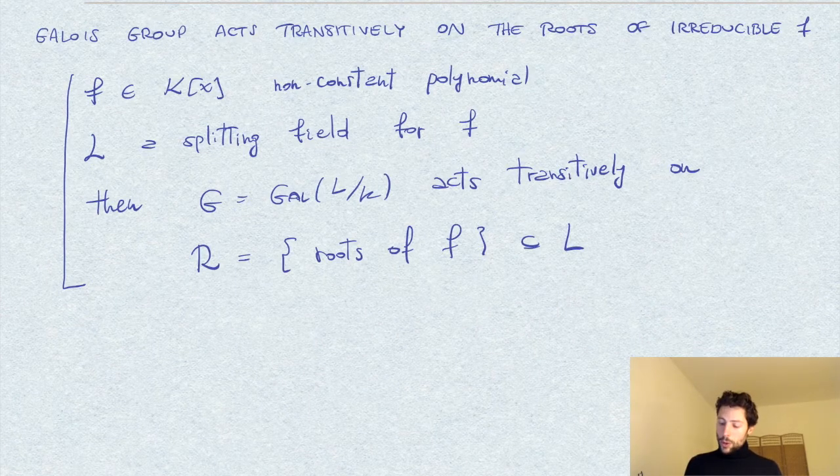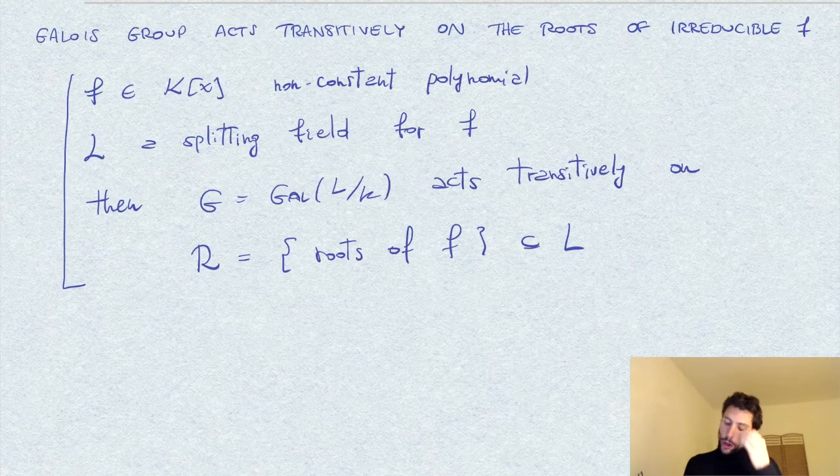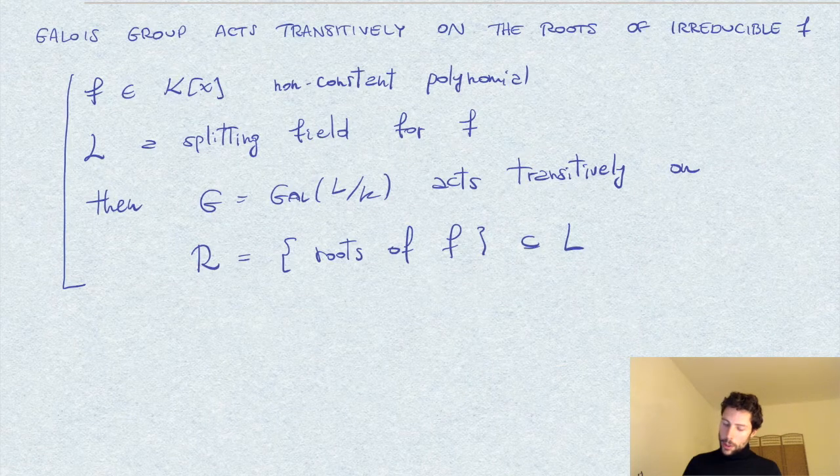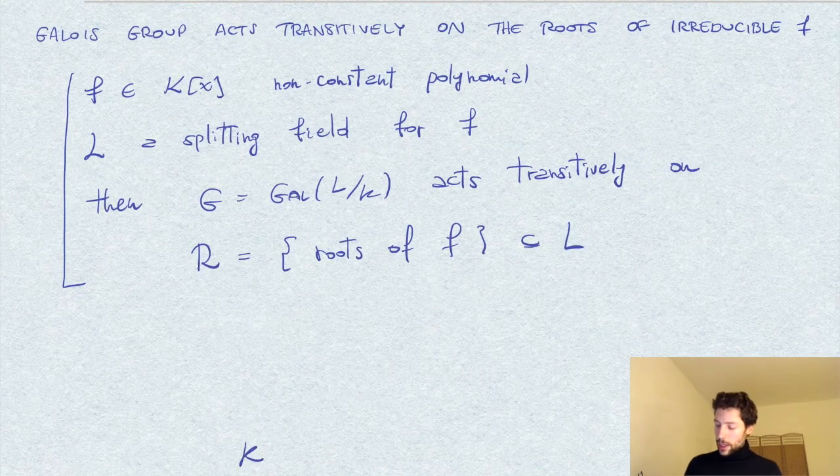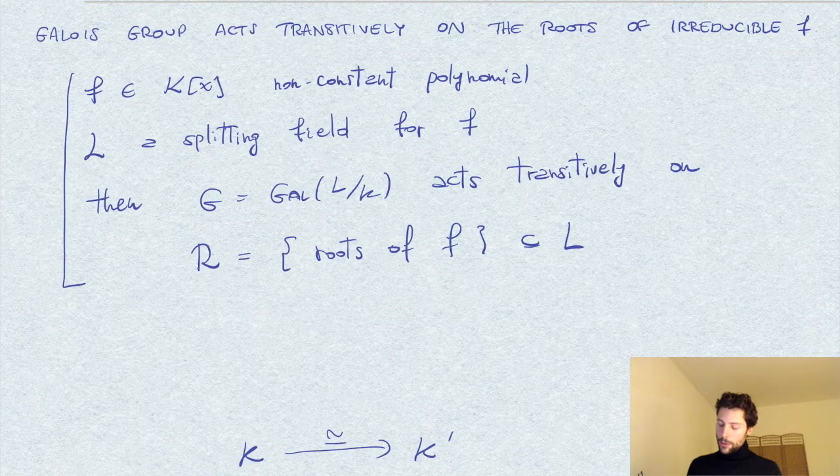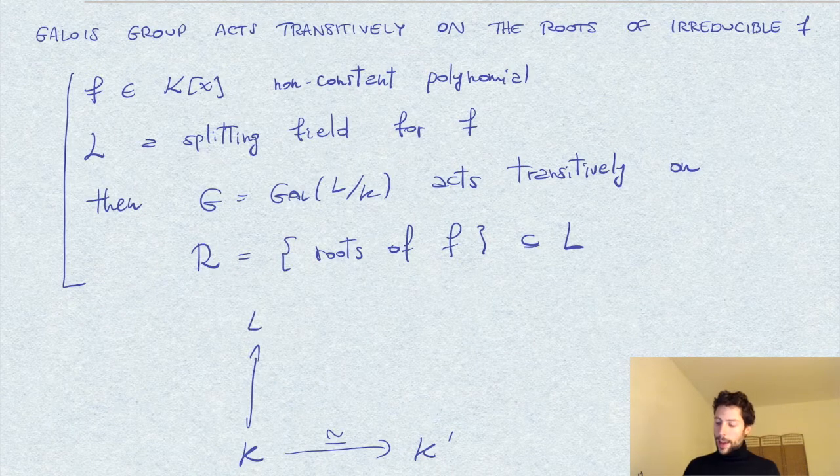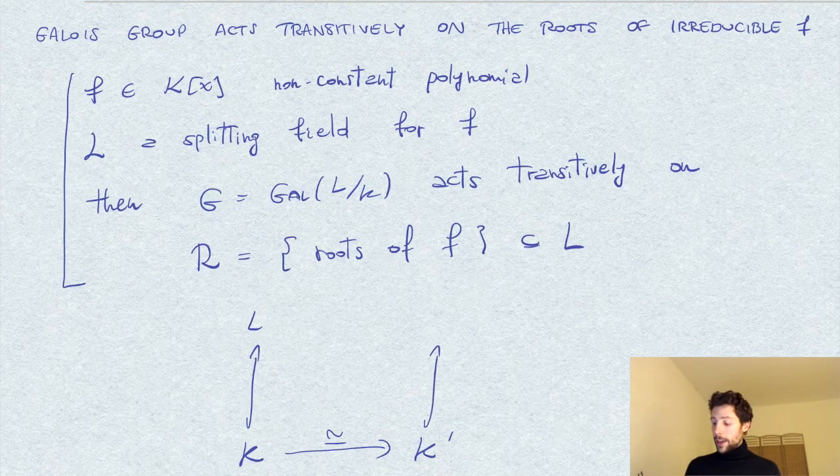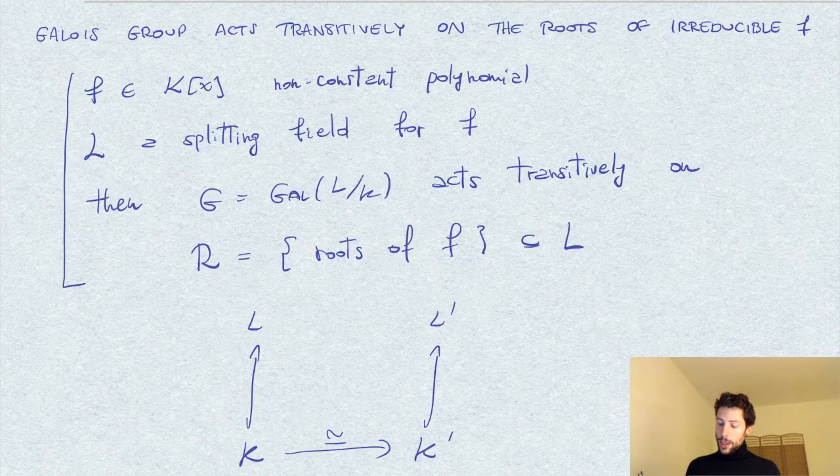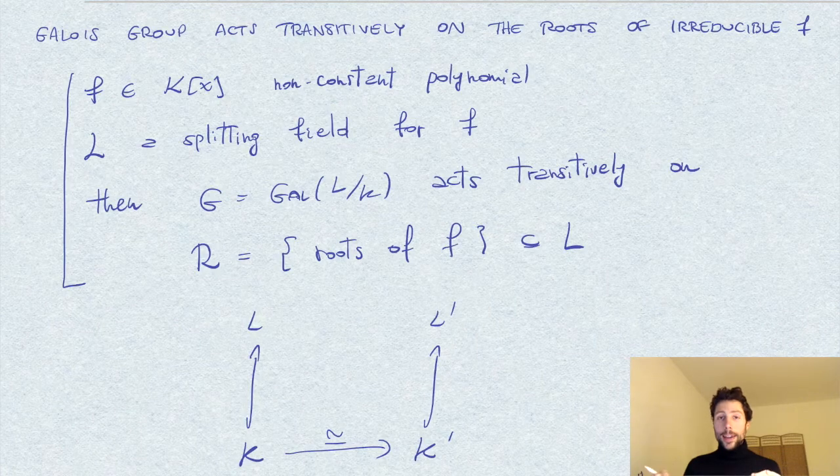I want to prove it using what we know on extension of isomorphism, the theorem about extensions of isomorphism. In the general case, we have two fields K and K prime with some isomorphism, and we have an extension over some field L, and an extension of L prime over K prime. Whenever we have such a diagram with these two extensions and isomorphism on the underlying ground fields,